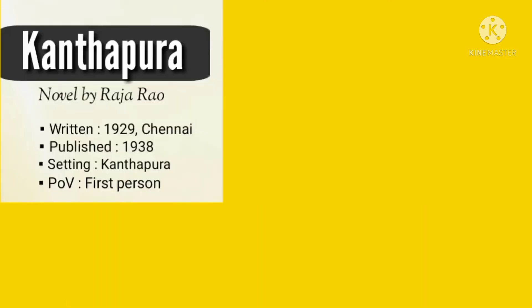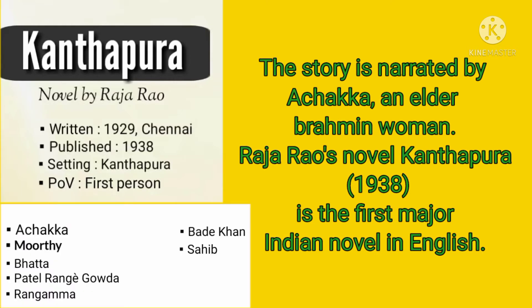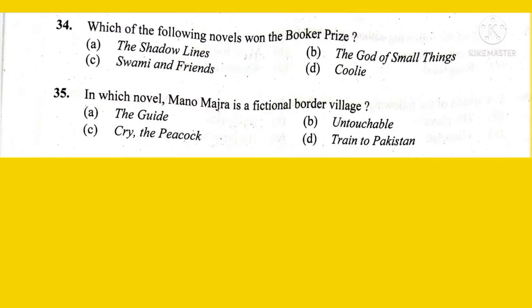Kanthapura, a novel by Raja Rao, was written in 1929 and published in 1938. The story is narrated by Achakka, an older Brahmin woman. Raja Rao's novel Kanthapura is considered the first major Indian novel in English. The characters include Achakka, Murthy, Bhatta, Rangegoda, Rangma, Bade Khan, and Sahi. Achakka narrates the story, and Murthy is the central character.